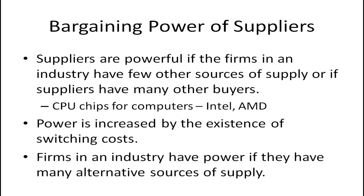Another factor that determines the bargaining power of suppliers is the existence of switching costs. If it's difficult to switch to a different type of product or a different supplier, then suppliers may be able to charge you more. If you've set up a mainframe computer system and you're getting your software from IBM, it's not easy to just switch out of it. The switching costs are enormous — getting rid of that computer system and putting in a new one. So IBM can extract some of the industry's profits by charging a higher price for their software or whatever it is they're selling.